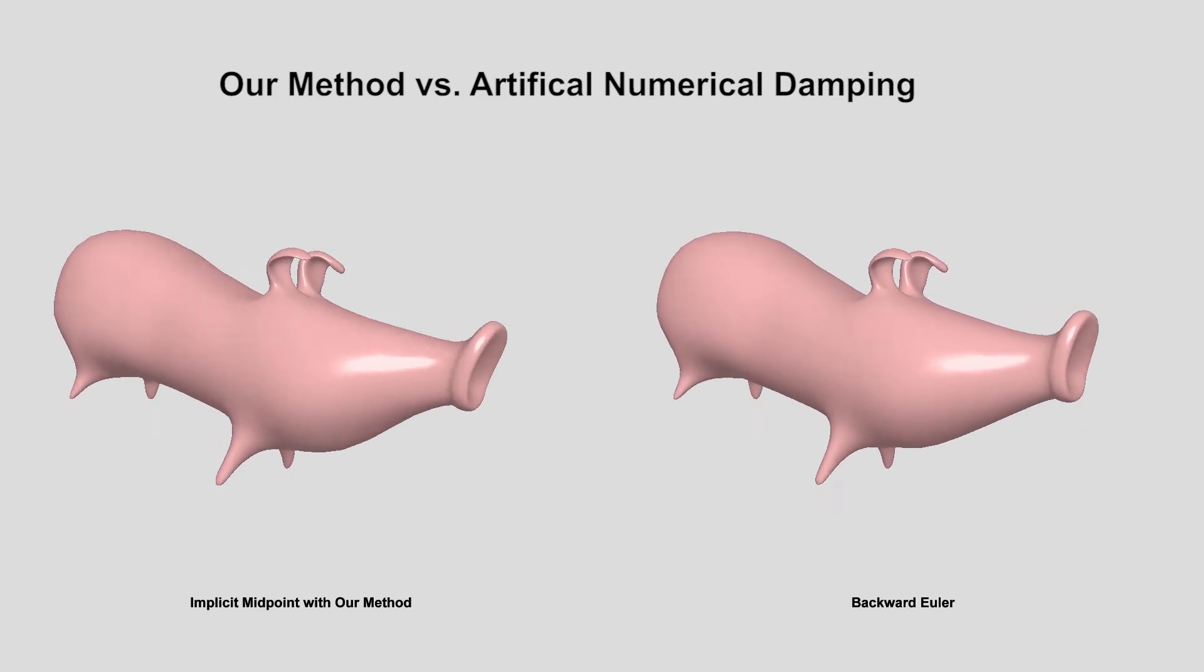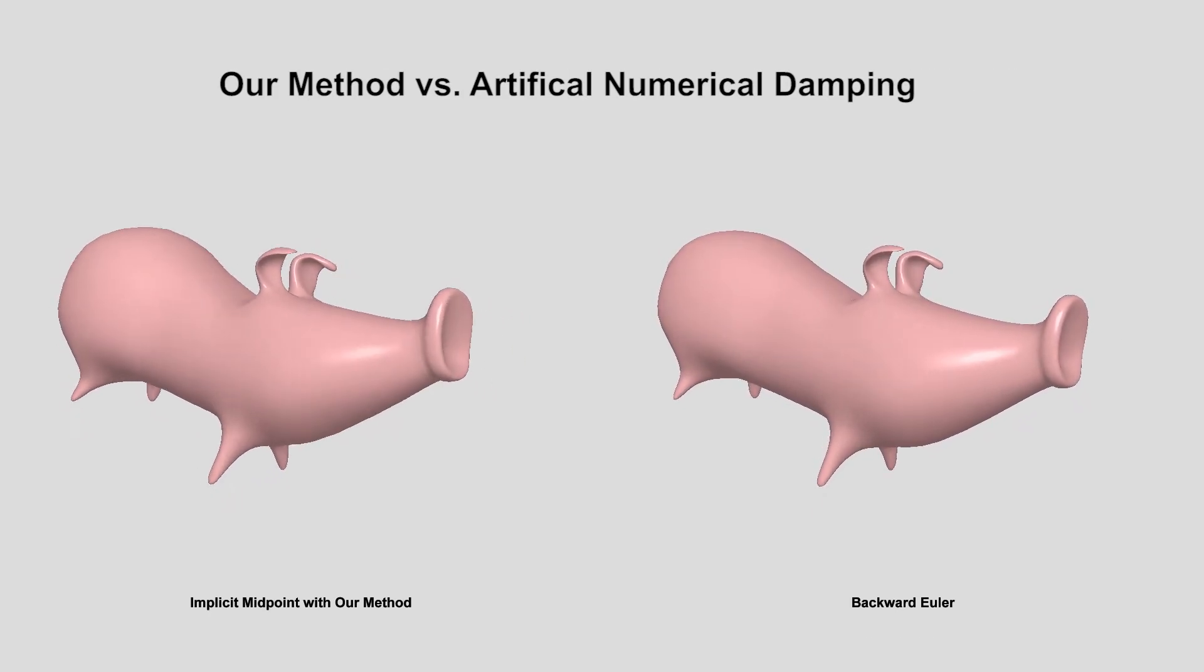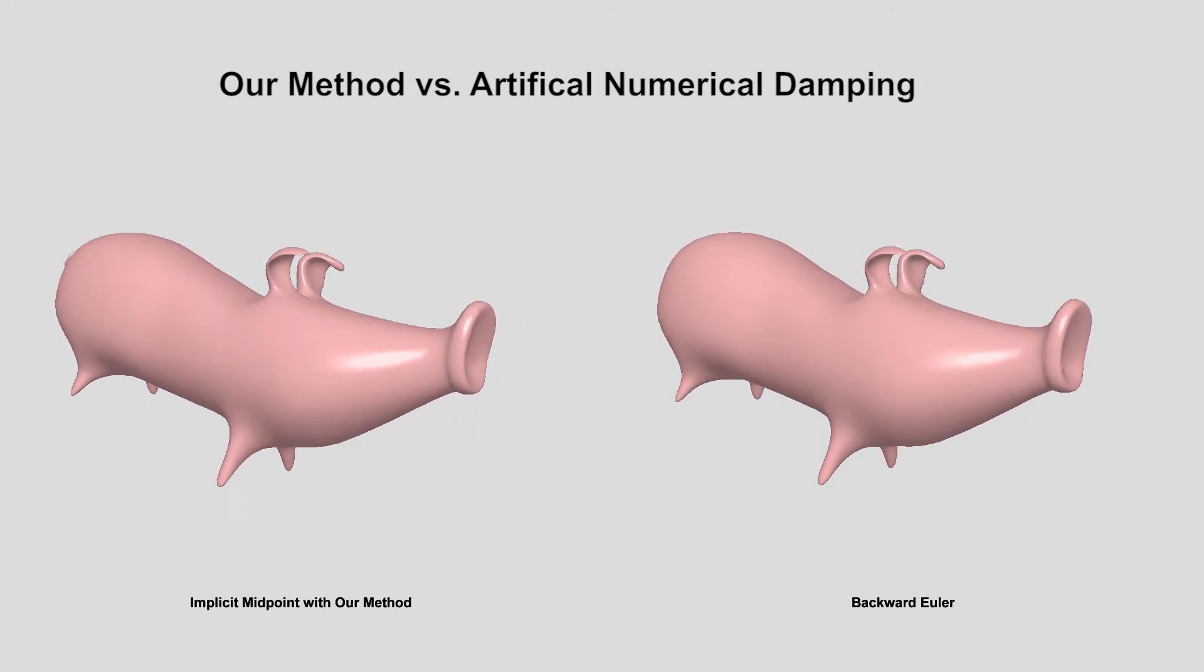Some integrators, such as backward Euler, contain artificial numerical damping, which is not user controllable and may be too strong. With our method, we have full control over the damping.